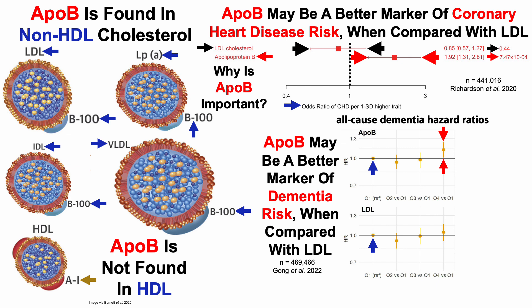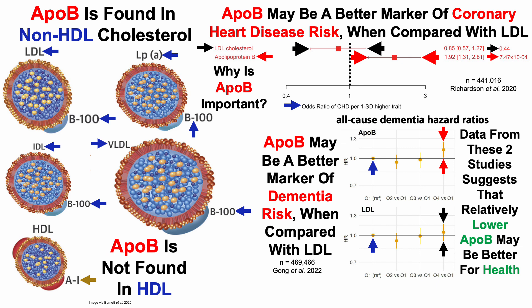Relatively higher APO-B is significantly associated with an increased risk for all-cause dementia. In contrast, for LDL, its confidence interval completely overlaps with the hazard ratio of 1, so it's not significantly associated with all-cause dementia risk.